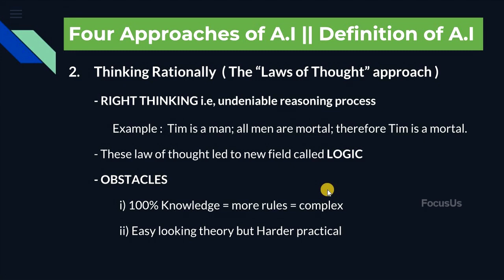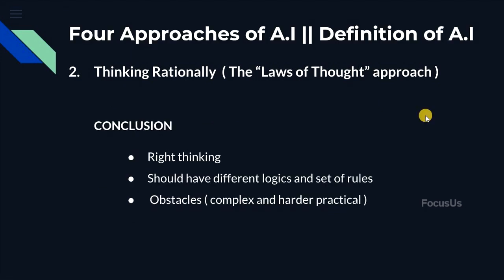The second obstacle is that it is much harder to solve problems in real life than in theory. To conclude thinking rationally: for a machine to think rationally it should think in the right way and have different logics and sets of rules to reach the goal. But we have two major obstacles — it being complex, and it being harder to do in practice than in theory.